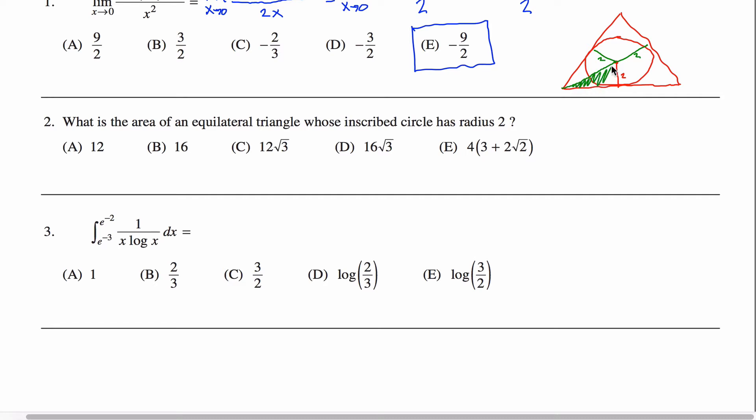So if I could just figure out the area of this green triangle right here, my answer, the area, is equal to the area of this green triangle times six.